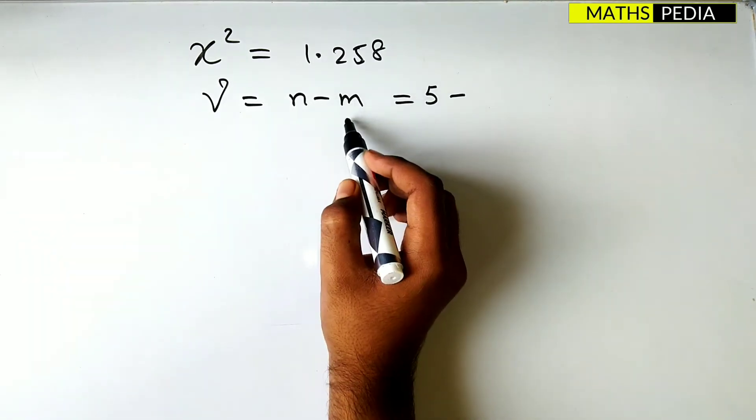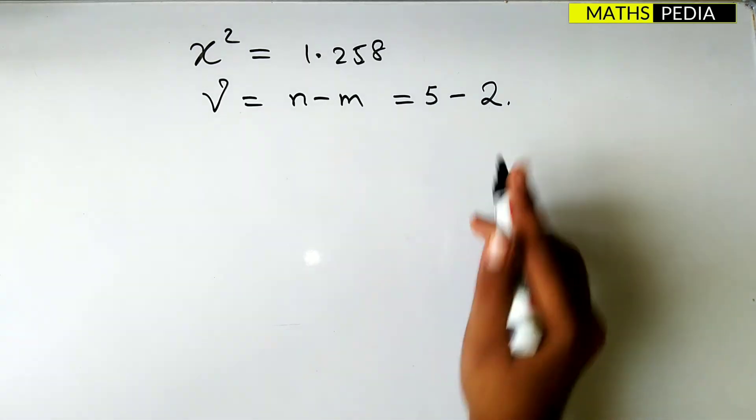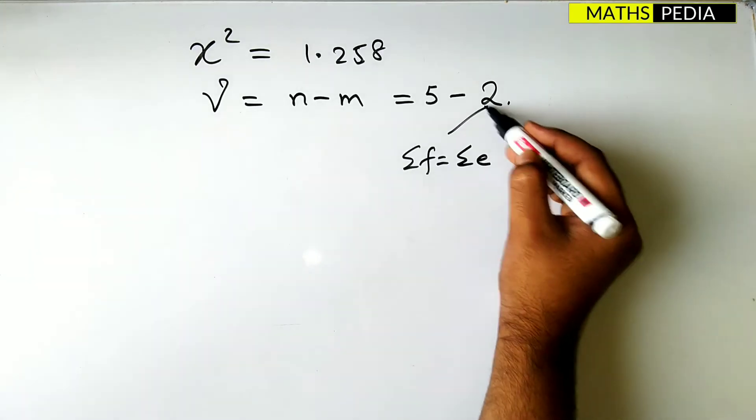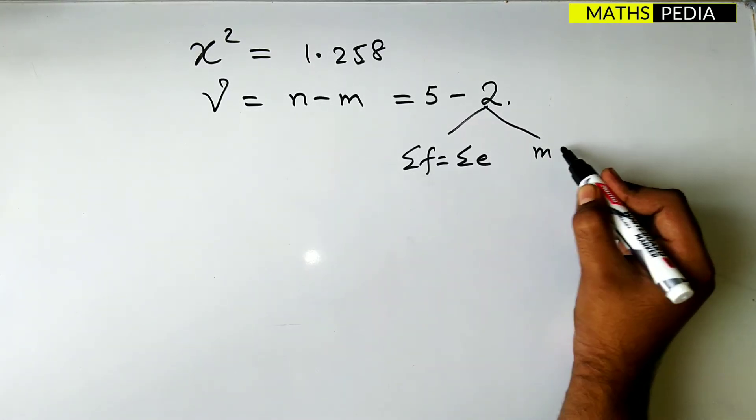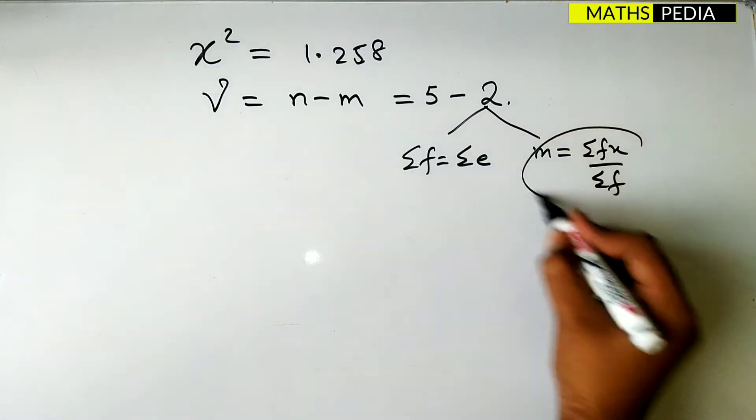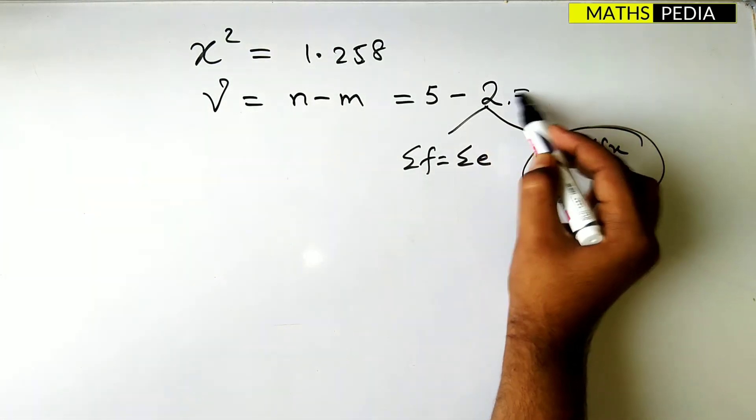And m is nothing but the number of quantities that are used to calculate the expected frequency. Here it is 2 again. Why? Because we have used summation of f equals summation of e. And one more thing. We have found out the mean of the Poisson distribution as well, which is nothing but summation of fx by summation of f. Again we have used this formula. Therefore we have used the two quantities. Therefore it is equal to 3.